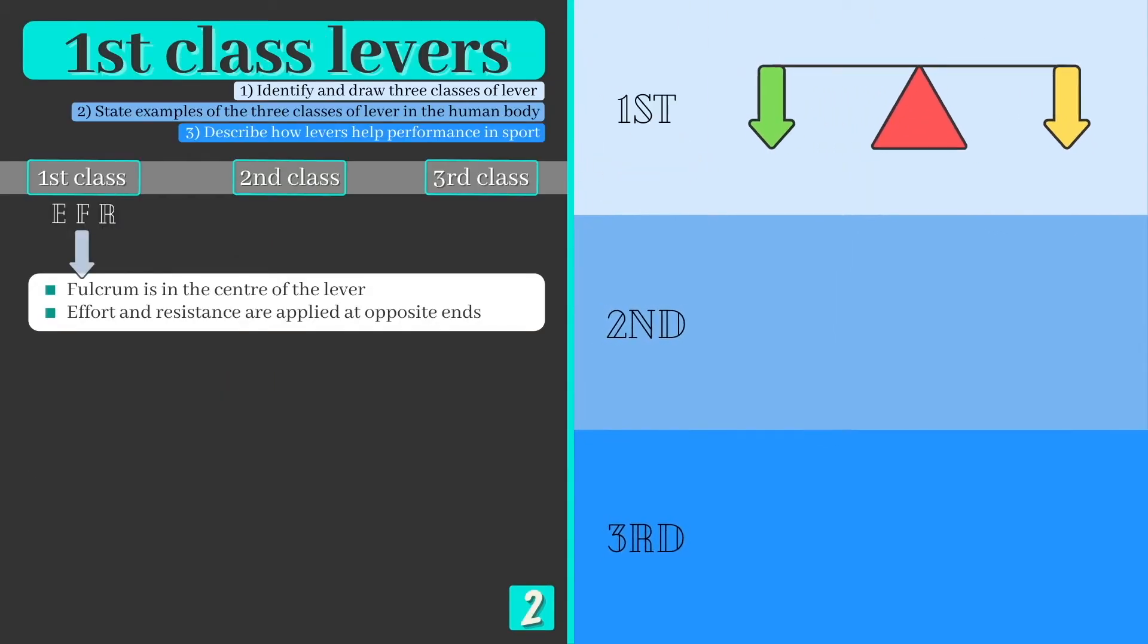Let's start with a first class lever, where the fulcrum can always be found in the centre, and effort and resistance forces are applied to opposite ends.